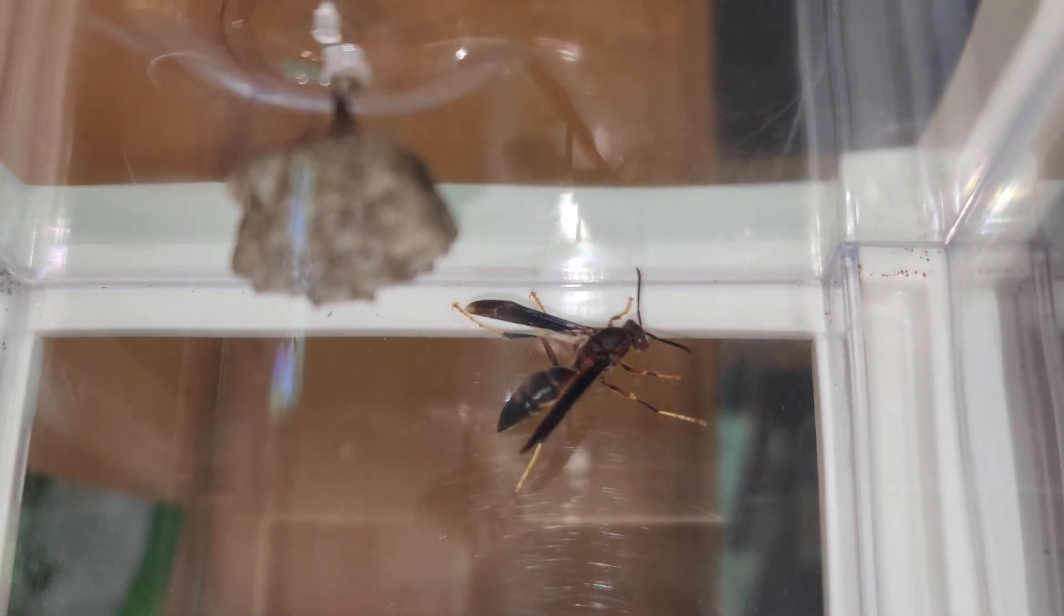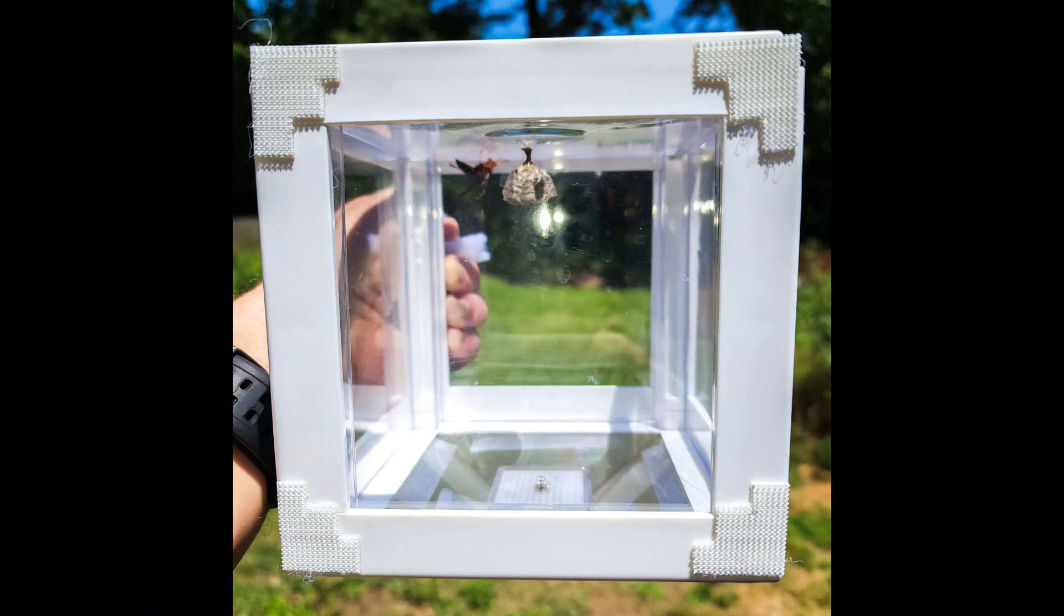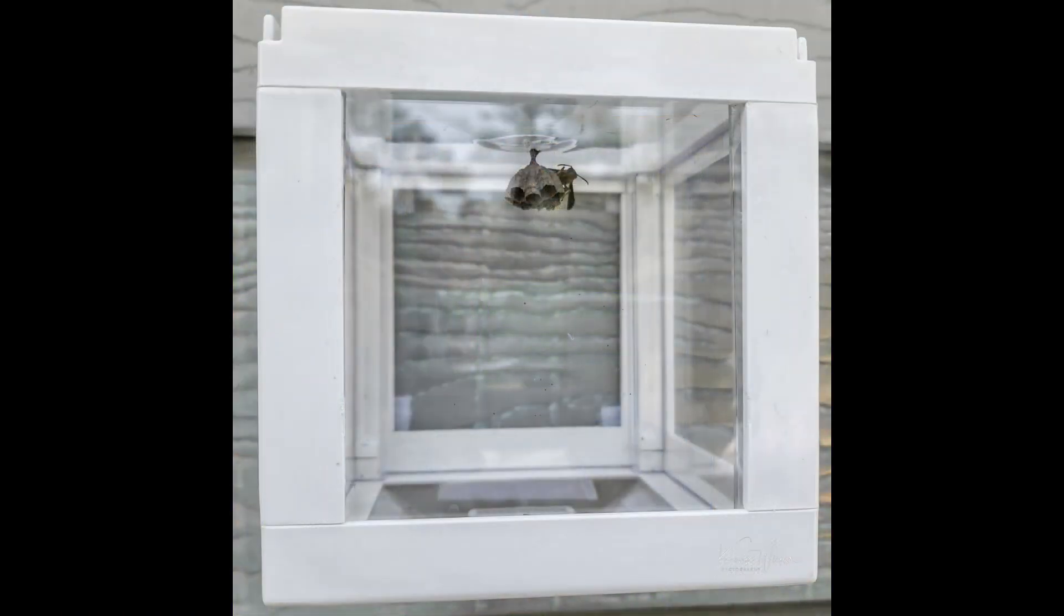While she was warming up, I put velcro on the sides of the container, took her outside, and attached the container to the side of the house on the aluminum siding. Now I can remove this screen so she can come and go from the bottom.